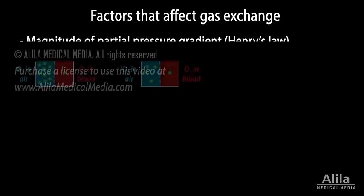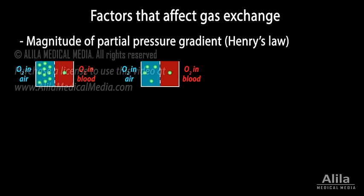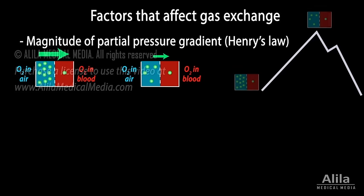Factors that affect gas exchange include the magnitude of partial pressure gradient. The greater the pressure difference, the more rapid the gas movement. At high altitudes, where partial pressures of all atmospheric gases are lower, the gradient for oxygen is smaller and it needs more time to diffuse into the blood.